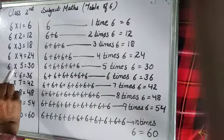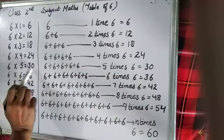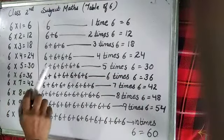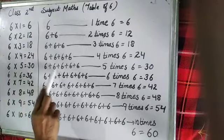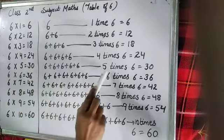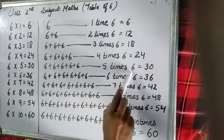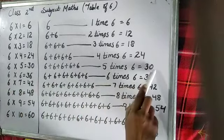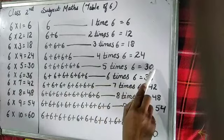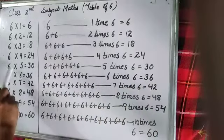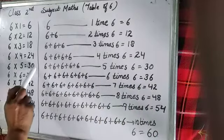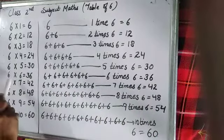6 5s are 30. Here is 5 times 6. So 5 times 6 is equal to 30. So we call 6 5s are 30.